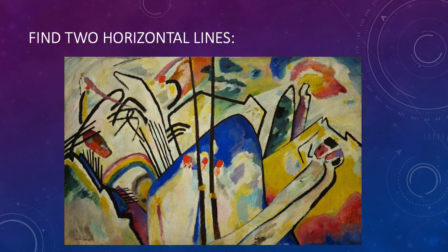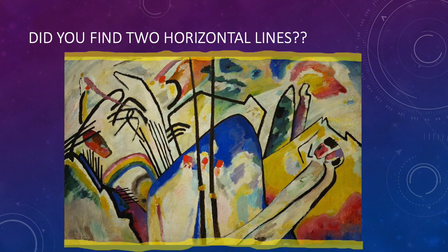Can you find two horizontal lines? This is a tricky one because Kandinsky doesn't really like horizontal lines very much. Did you find the two horizontal lines? Tricky, tricky! That's right, I just used the edges of the composition! Horizontal lines go side to side.